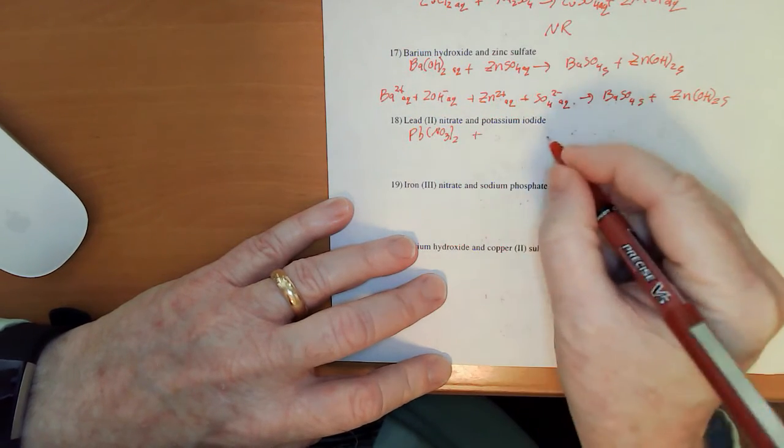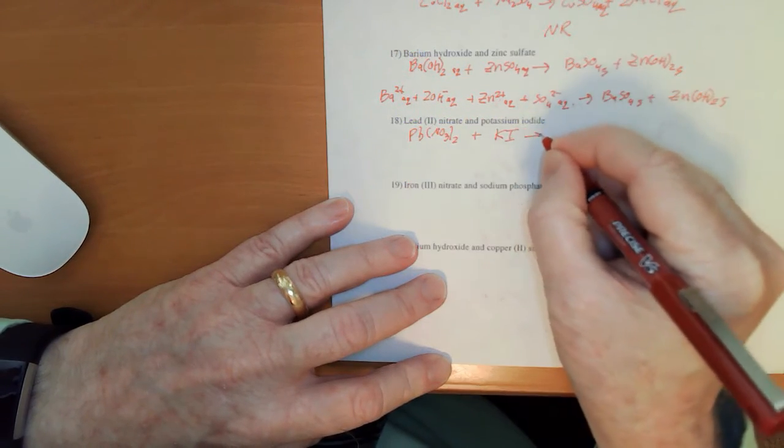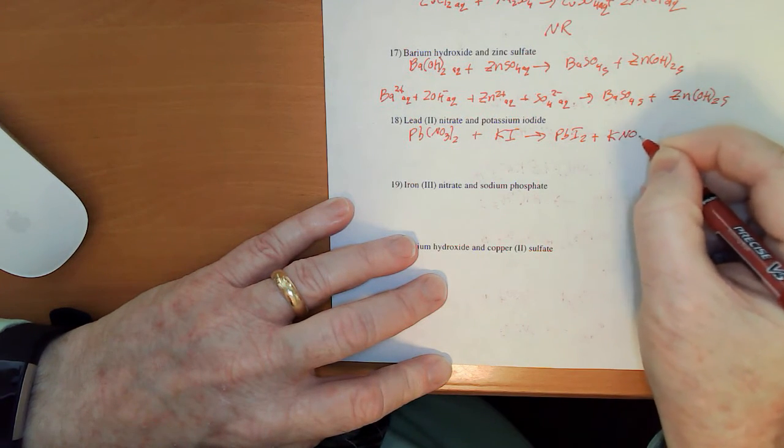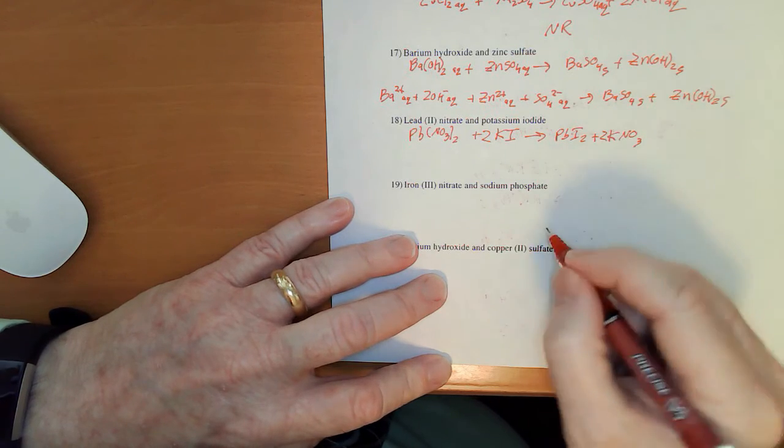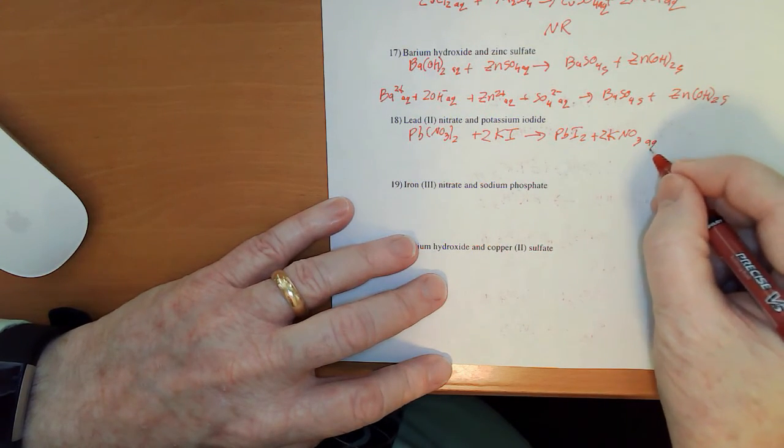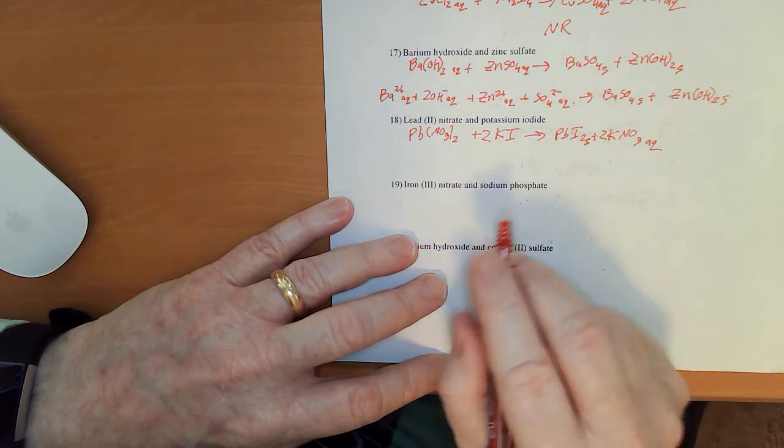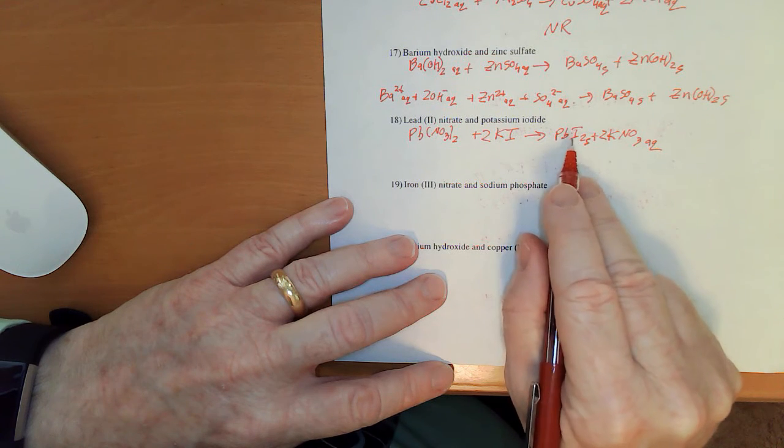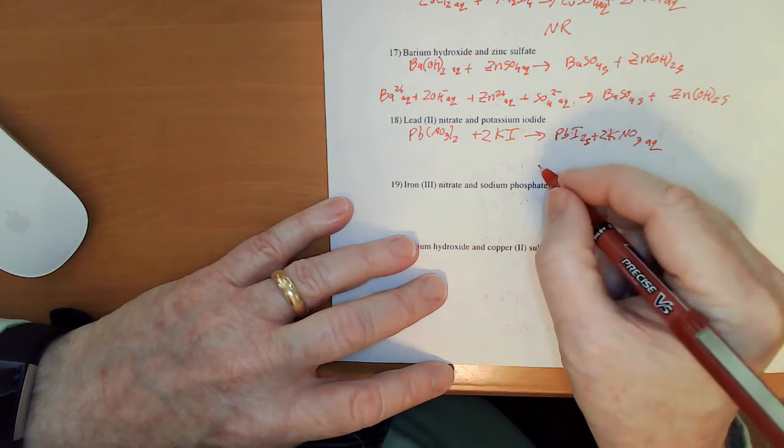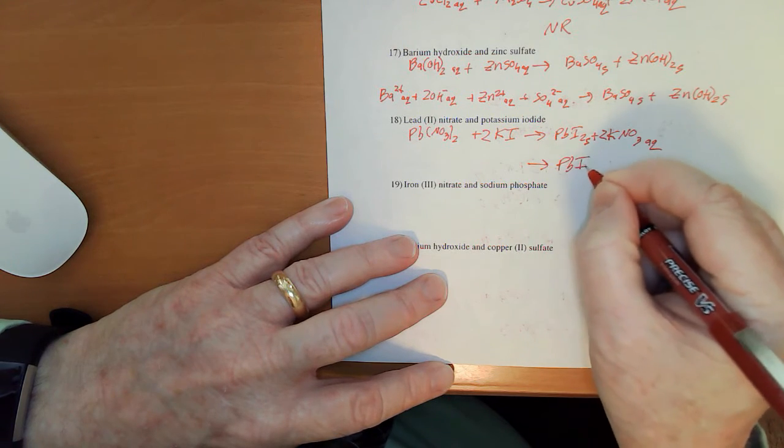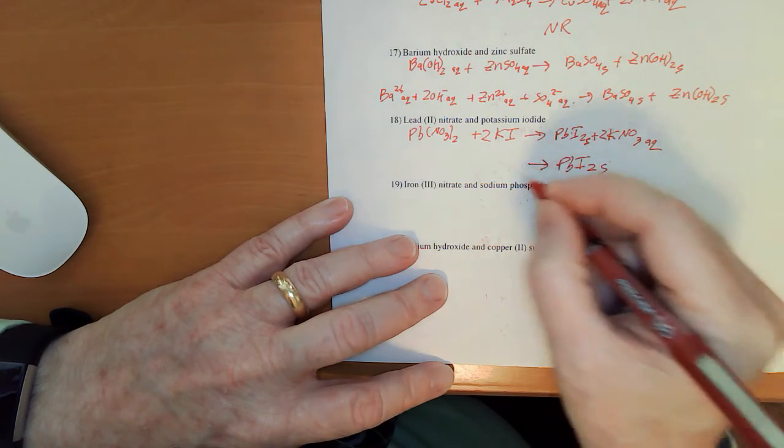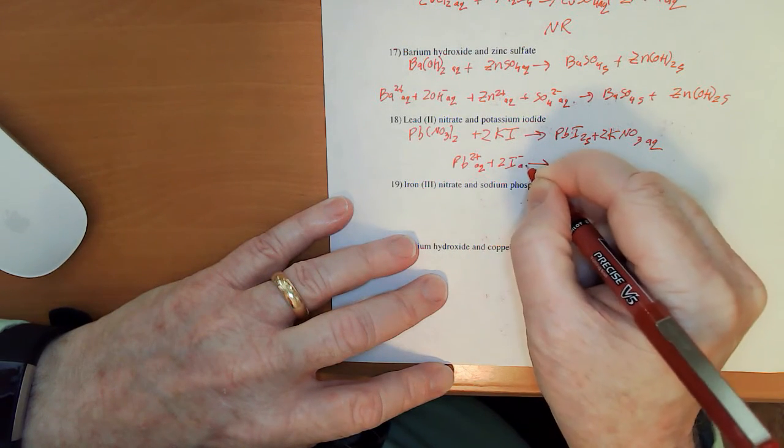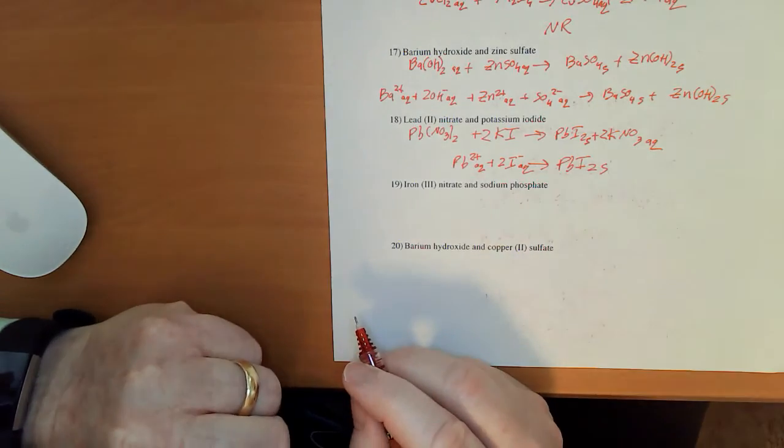Lead nitrate and the potassium iodide. Partner exchange, PbI2, KNO3. I'm going to need to put a 2 there and a 2 there. Nitrates, always aqueous. Now, this is one of the exceptions. Chloride, bromide, iodides are pretty soluble except lead, mercury, silver. So, PbI2, which is a brilliant yellow precipitate. Pb 2 plus aqueous. 2 I minus aqueous gives me the PbI2 solid.